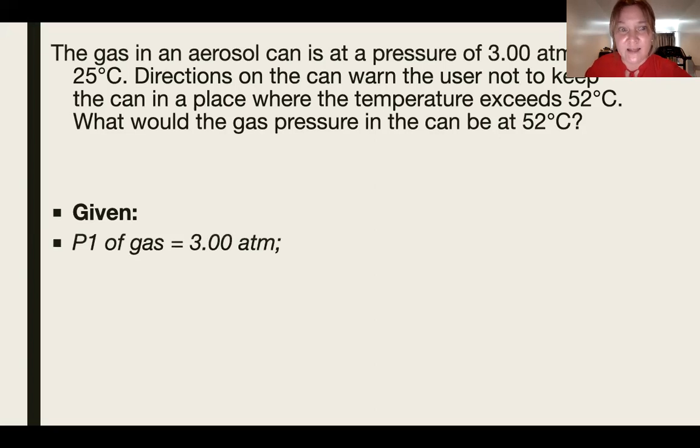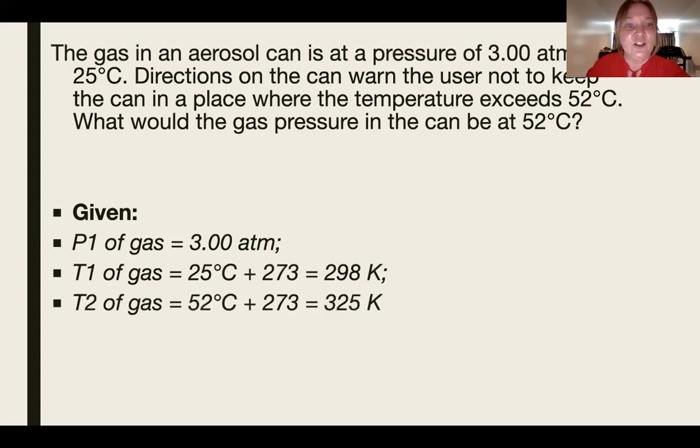So we're given P1, which is 3 atm. T1, which is 25 plus 273, because we have to change it to K. That's 298. And T2, which is 52, which is equal to 325 K. Our unknown is P2.